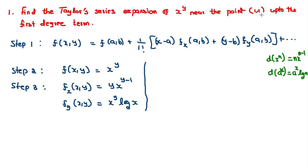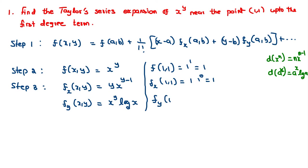Substitute the point (a,b) = (1,1). So f(1,1) is equal to 1 to the power 1, which equals 1. fx(1,1) is equal to 1 into 1 to the power (1 minus 1), that is 1 to the power 0, and anything to the power 0 is 1, so fx(1,1) equals 1. fy(1,1) is equal to 1 to the power 1 into log 1, and since log 1 is 0, fy(1,1) equals 0. Now we have all the values.